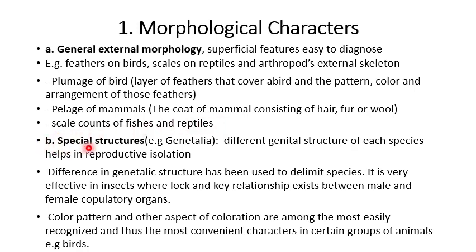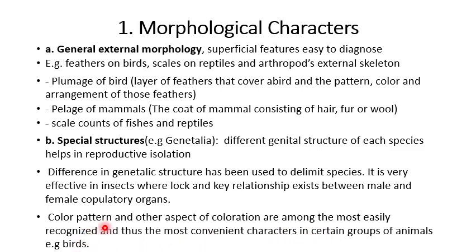Another category is special structures. For example, genitalia: the different genital structures of each species help in reproductive isolation. Differences in genitalic structure have been used to delimit species, and are very effective in insects where a lock-and-key relationship exists between male and female copulatory organs. Color pattern and other aspects of coloration are among the most easily recognized and thus the most convenient characters in certain groups of animals, for example birds.